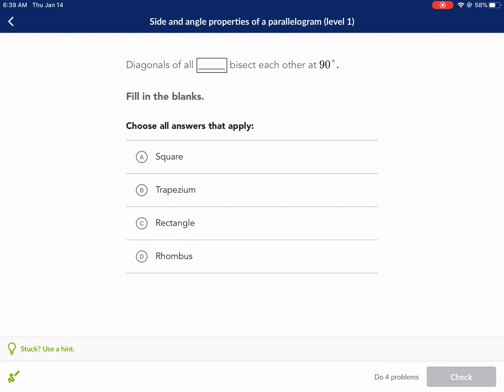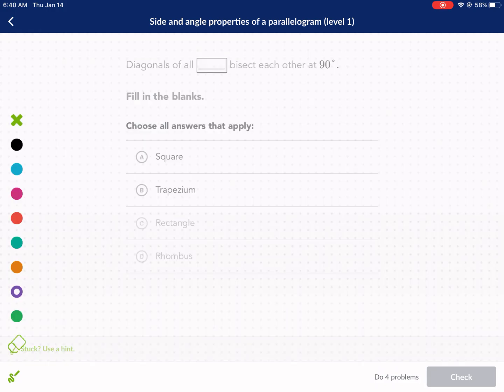Diagonals of all blank, looks like rectangle line, bisect each other at 90 degrees. All it's asking here is, what shapes have diagonals that bisect each other at 90 degrees? One thing you'll need to know is, first off, we're referring to parallelograms here. That means a shape like this, but this is just one example. There's a lot of properties of parallelograms. Opposite angles are equal. Opposite sides are equal. Diagonals bisect each other. Opposite sides are parallel.